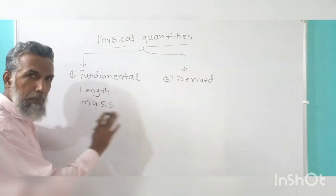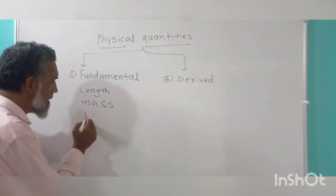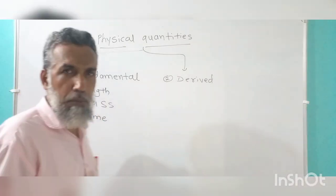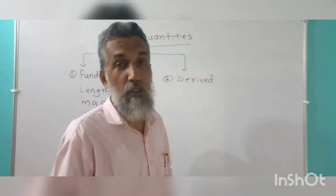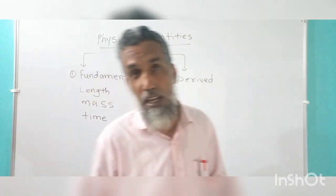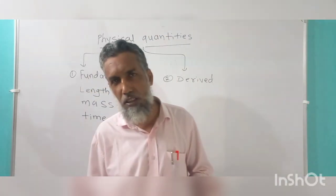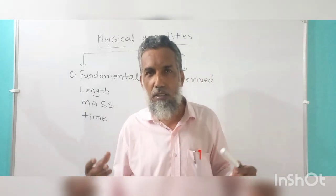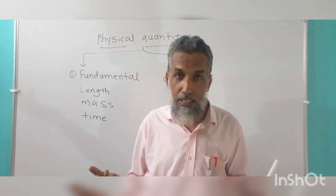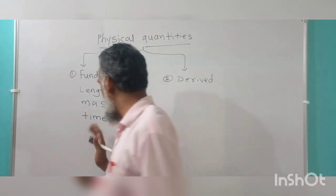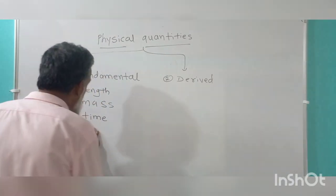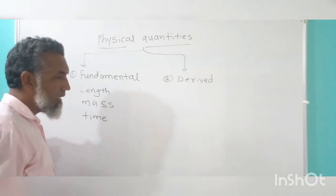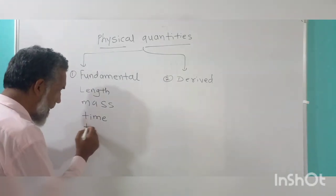Mass is also a fundamental quantity. Time is also a fundamental quantity, because when you are measuring time you just use a watch. At that time you don't need to know about the mass or the length. So time is an independent quantity, and that's why it is called a fundamental quantity.